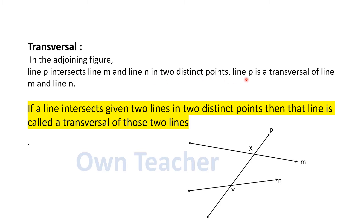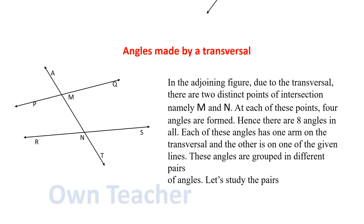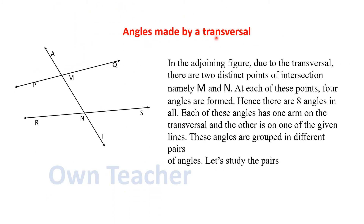Line P is a Transversal of Line M and Line N. If a line intersects two given lines in two distinct points, then that line is called a Transversal of those lines. This is a Transversal of Line P.